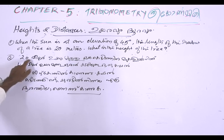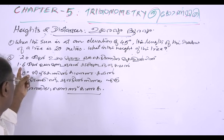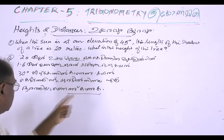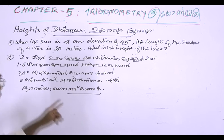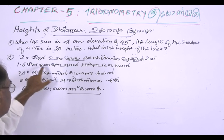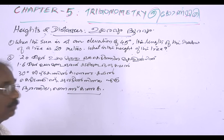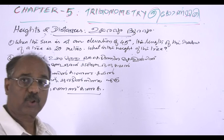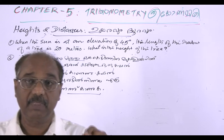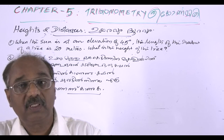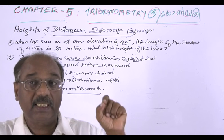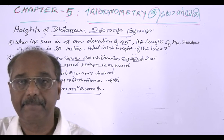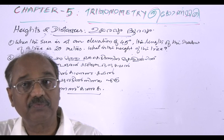The second question: a man of height 1.6 meters sees a ship in the sea at an angle of depression of 30 degrees. Find the distance of the ship from the foot of the building.